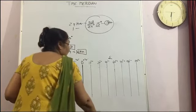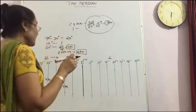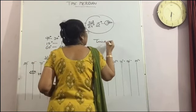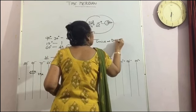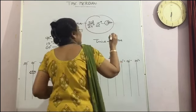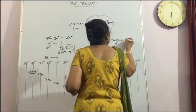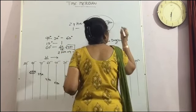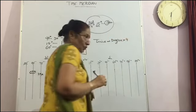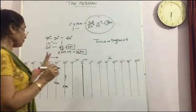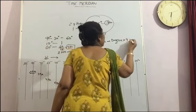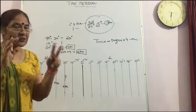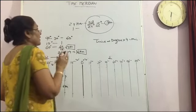Now I will tell you there is one formula for calculating the time. There is time calculated by the degree. Degree into 4. And the answer will come in minutes. Because 4 minutes. There is the 4 minute difference between the 2 meridians or longitudes.